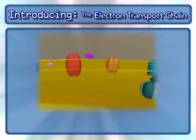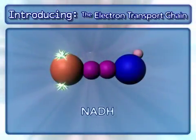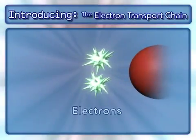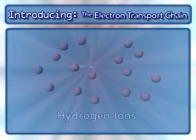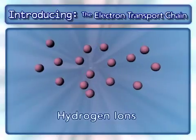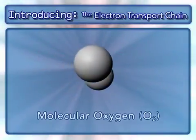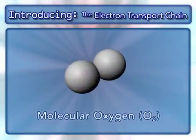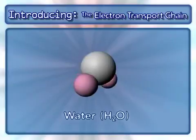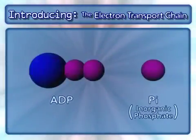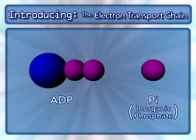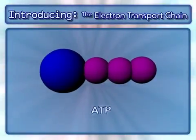Other key components in this process are NADH and the electrons from it, hydrogen ions, molecular oxygen, water, and ADP and inorganic phosphate, which combine to form ATP.